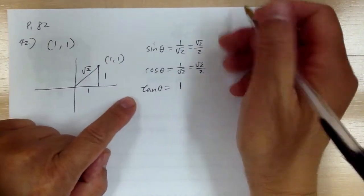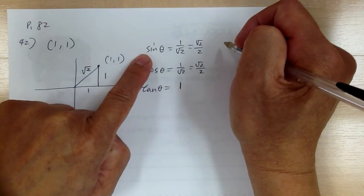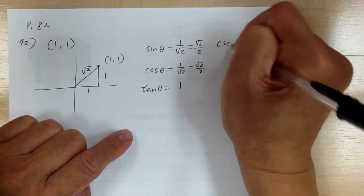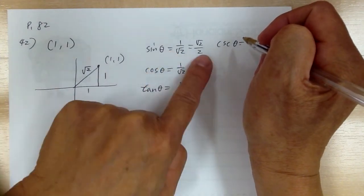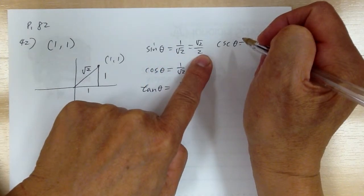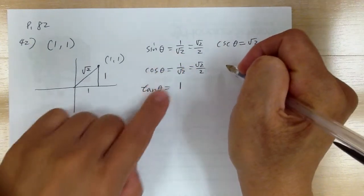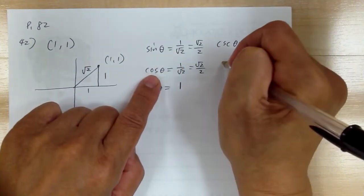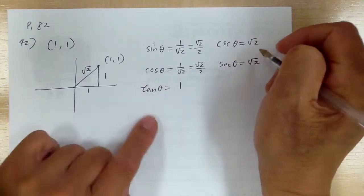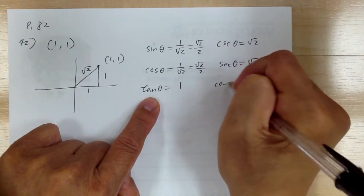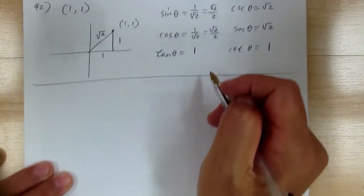After you get the three primary functions, you can get the secondary. The inverse of sine is cosecant, so you just flip it over. Don't flip the rationalized form over because you'd have to simplify again — flip this one over and you get √2. For secant, flip that one over and you get √2. And cotangent: flip it over, you get 1. That's number 42.